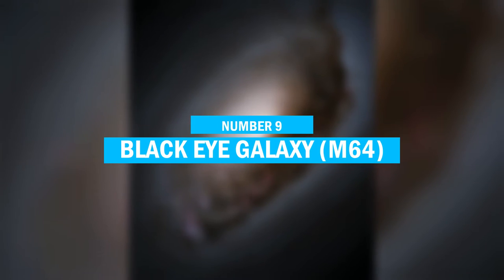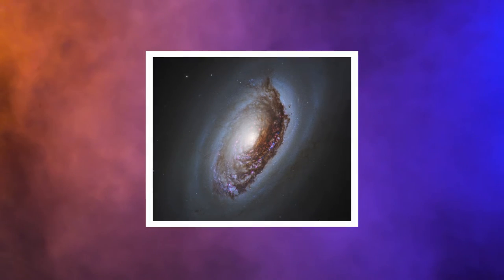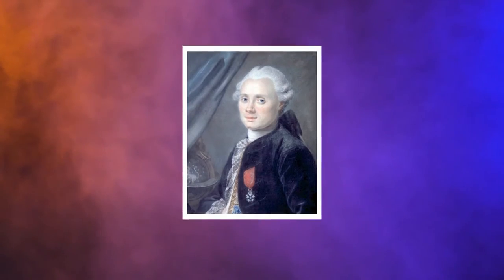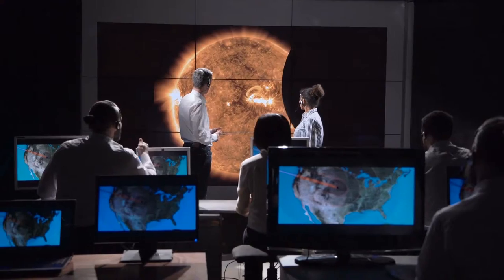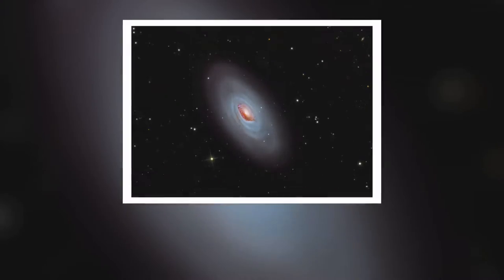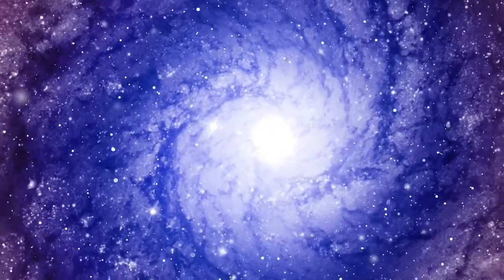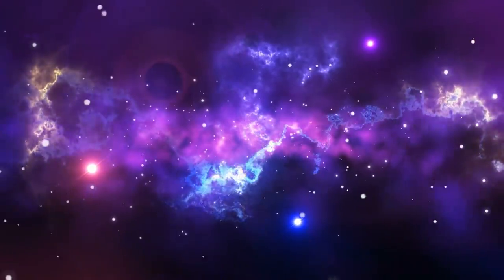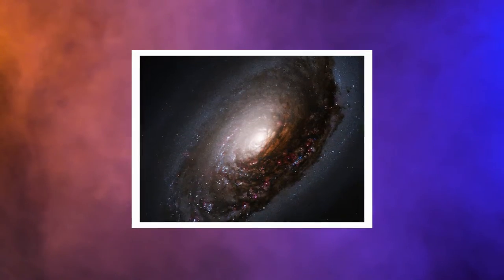Number 9. Black Eye Galaxy, M64. The Black Eye Galaxy is a stunning spiral galaxy in the constellation Kama Berenices. The French astronomer Charles Messier discovered it in 1779. Astronomers call the Black Eye Galaxy the Sleeping Beauty Galaxy or the Evil Eye Galaxy. It's around 17 million light-years from our planet. It's made up of a great number of stars made of hydrogen gas. As a result, there's a red color in the galaxy's center.